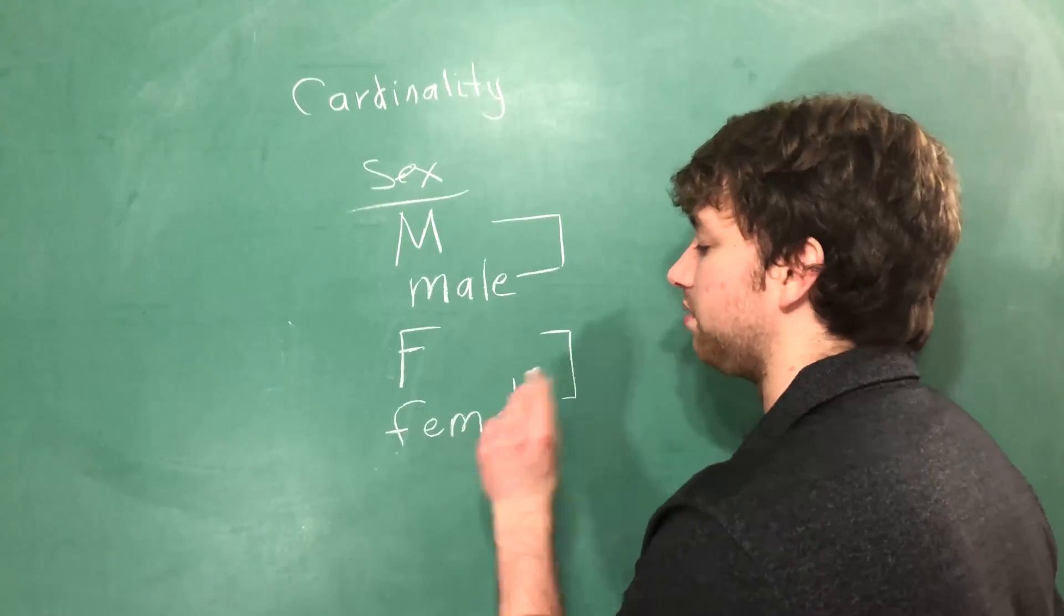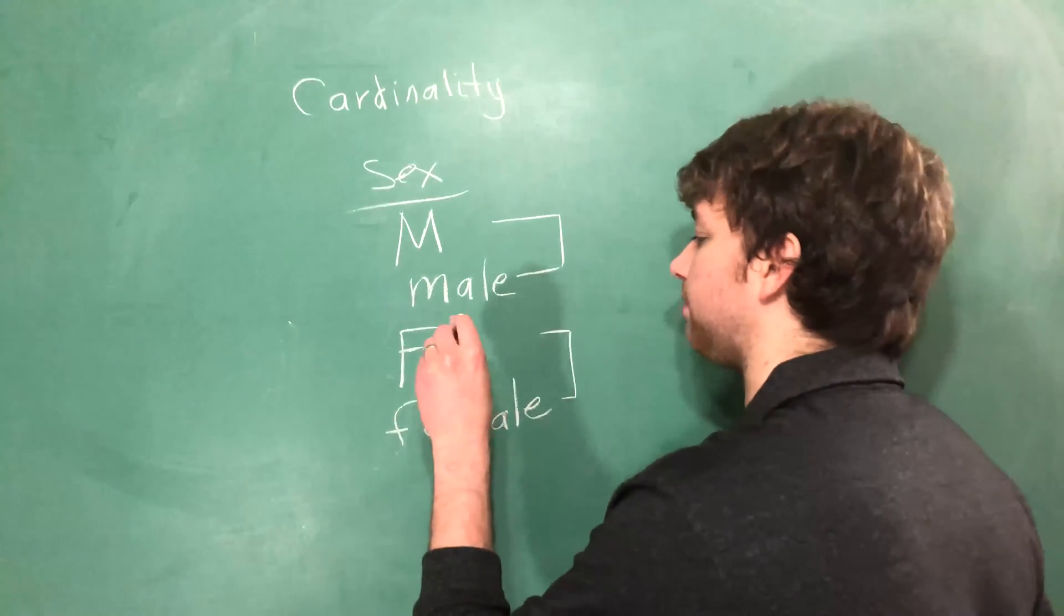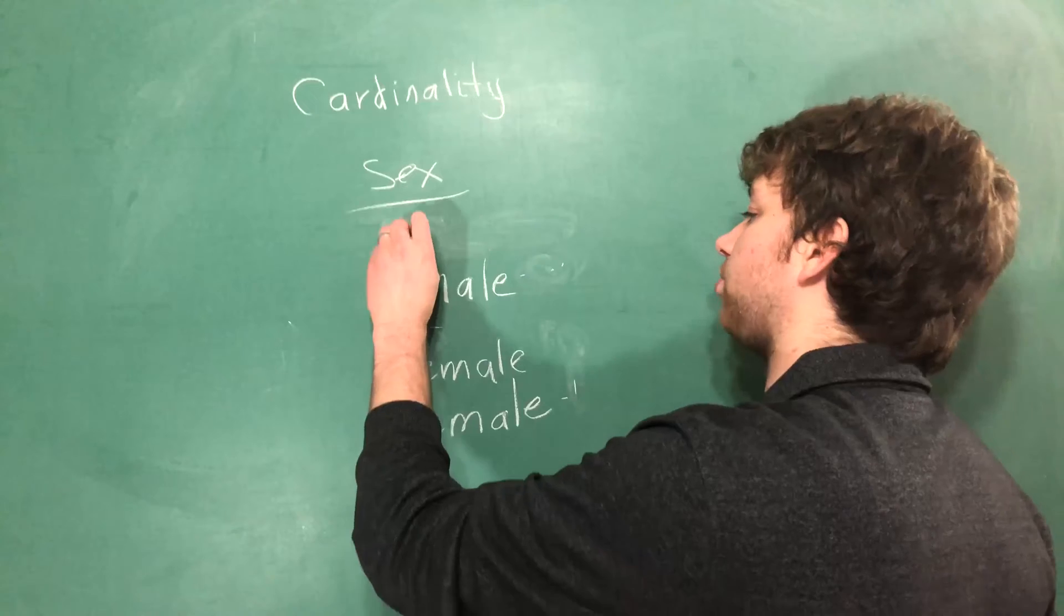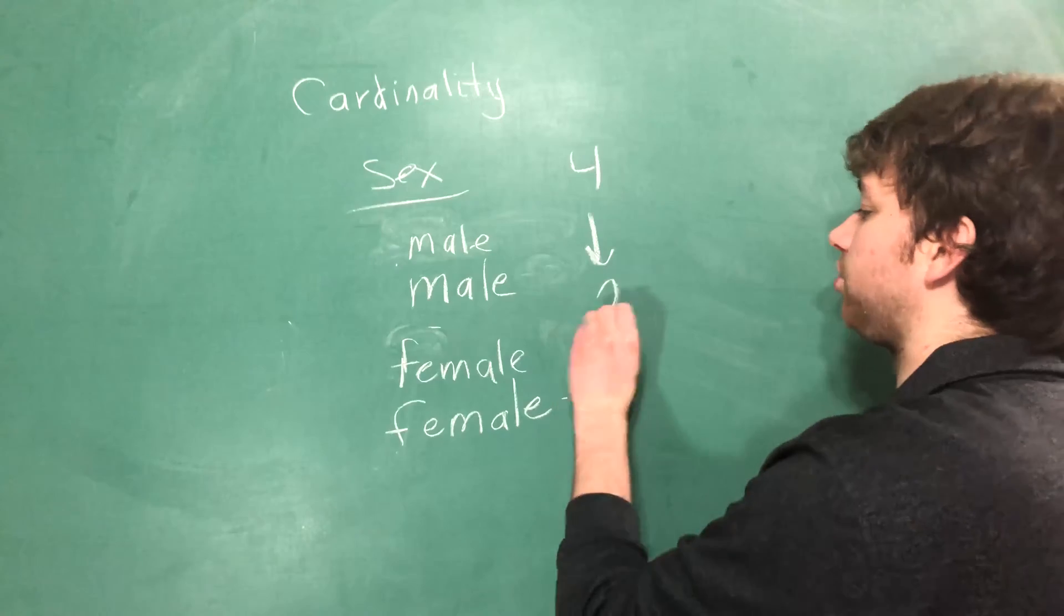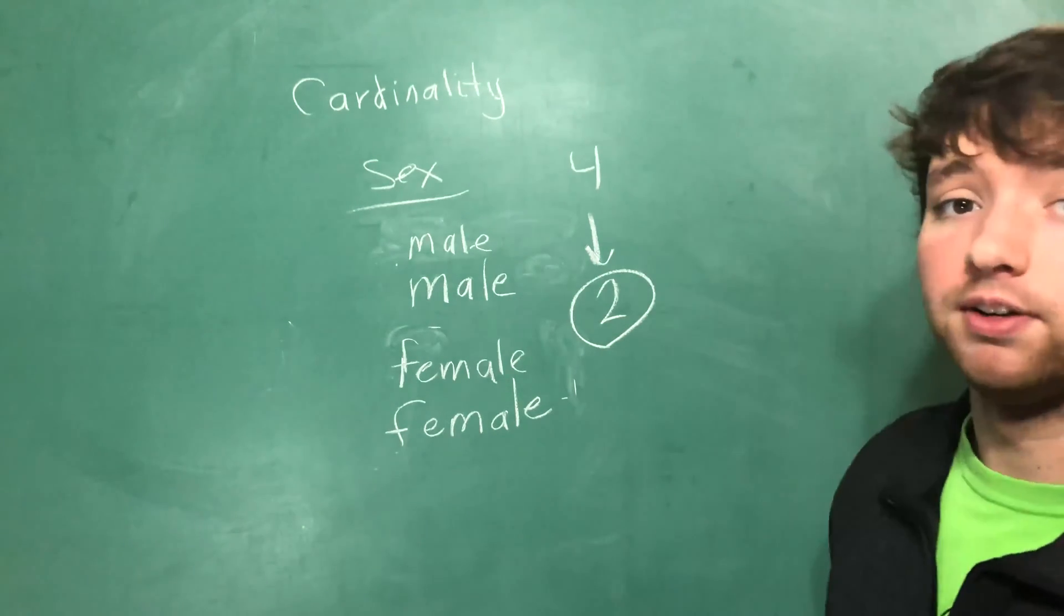The fix for this is to combine these values. So basically, anytime there's an F you can just change it to female. Anytime there's an M we can change it to male. So we reduced our cardinality from 4 down to 2, which is the correct value. So that's all I got for cardinality.